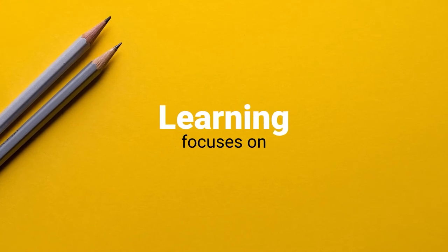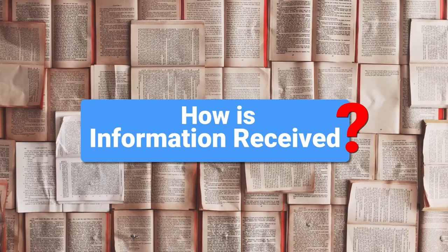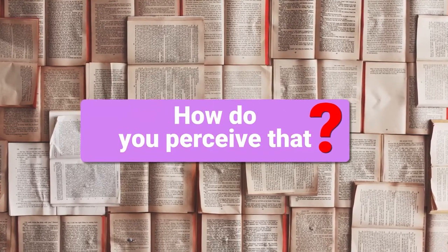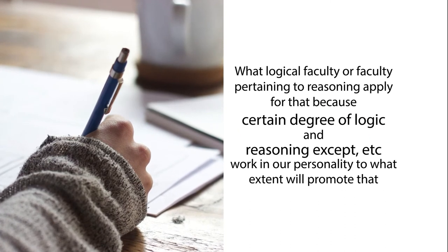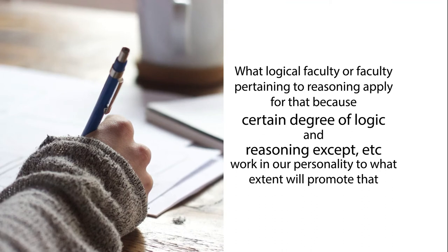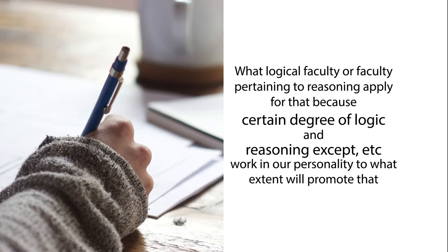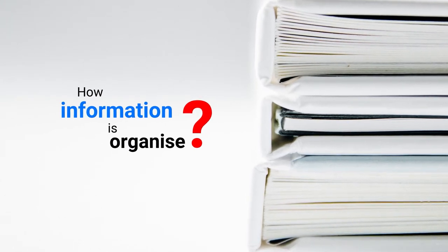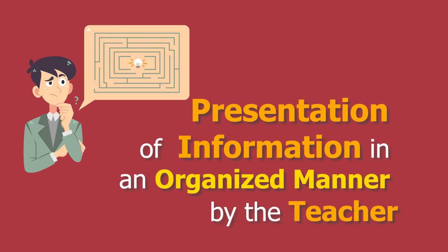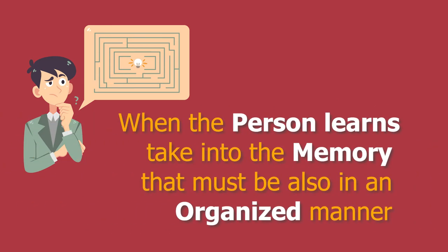Learning, with respect to Cognitivism, focuses on how information is received, how you perceive it, how you attend to it, and what you do with it. Then, how information is processed — what logical faculty or reasoning you apply. Because certain degree of logic and reasoning work in our personality, and we must promote them. Then, how information is organized — meaning the presentation of information in an organized manner by the teacher, and when the person learns and takes it into memory, that too must be in an organized manner. If there is incompatibility between the two, there may not be successful memorization and hence retrieval.